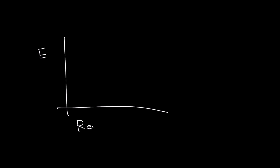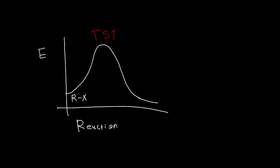In terms of an energy graph, there's only one transition state — transition state 1. You need to know that this whole reaction, which is SN2, happens in one stage. At first, you have the carbon chain attached to the halogen, and then you have the carbon chain attached to the nucleophile.